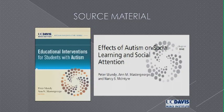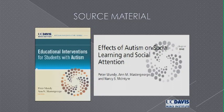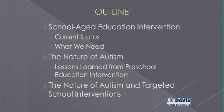Most of what I'm going to talk about today is in a chapter in this book. I think you can still go to the website for this book and download the chapter for free — Educational Interventions for Students with Autism. I want to talk about the current status and the future needs of research and practice for intervention for children with autism in schools.